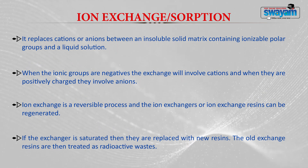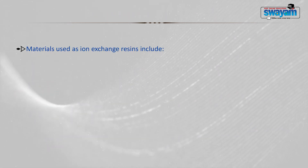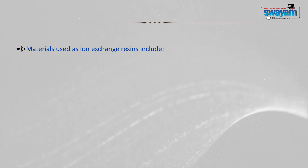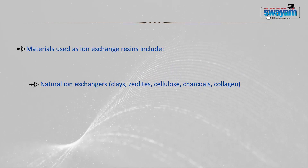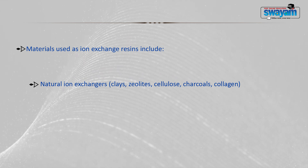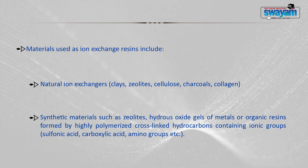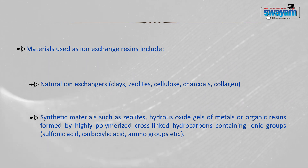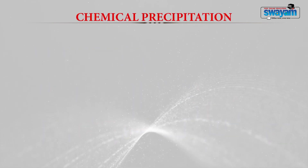Old exchange resins are then treated as radioactive waste. Materials used as ion exchange resins include natural ion exchangers and synthetic materials. Natural ion exchangers include clays, zeolites, cellulose, charcoal, and collagen. Synthetic materials include zeolites, hydroxide gels of metals, or organic resins formed by highly polymerised cross-linked hydrocarbons containing ionic groups like sulfonic acid, carboxylic acid, and amino groups.